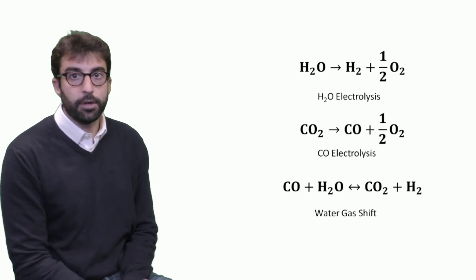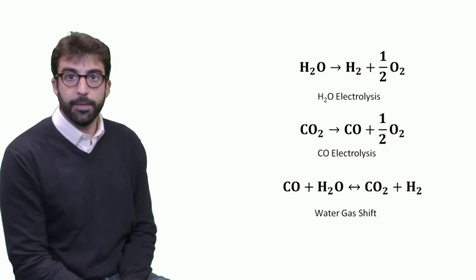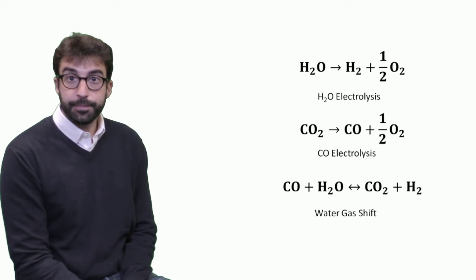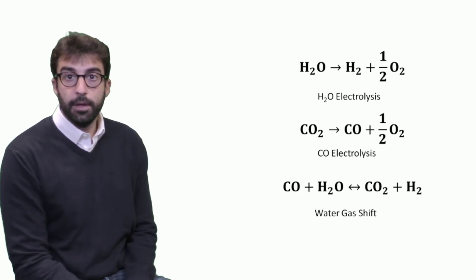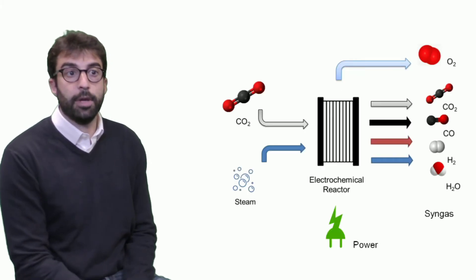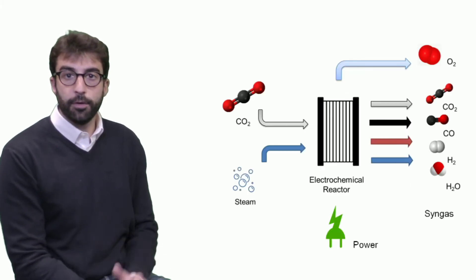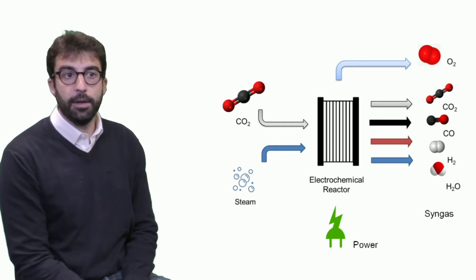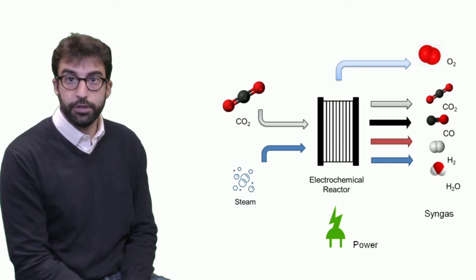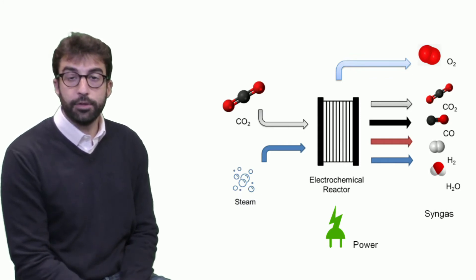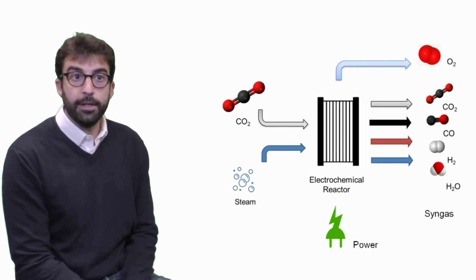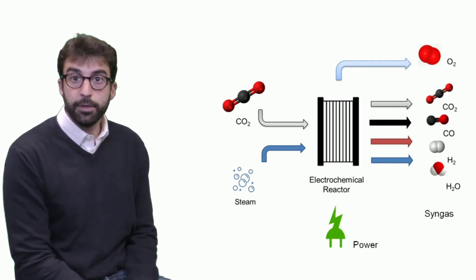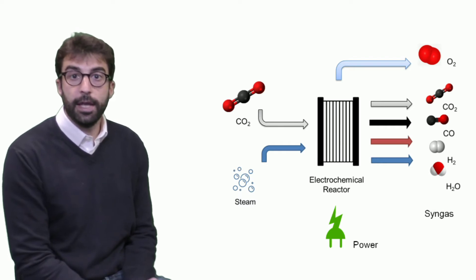If we consider a black-box view of a CO2 electrolyzer fed with carbon dioxide and steam, what happens inside is not only electrochemical but also chemical reactions. We feed the reactor with both steam and carbon dioxide. On one side, oxygen is separated via the electrochemical reaction. On the fuel side, we may have a mix of four different chemicals: carbon dioxide, carbon monoxide, hydrogen, and steam.